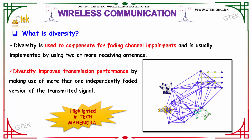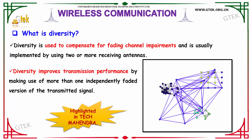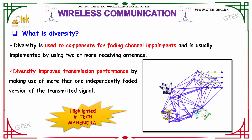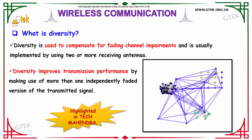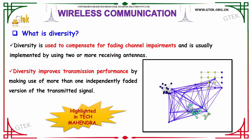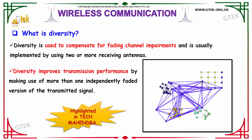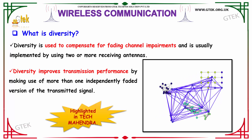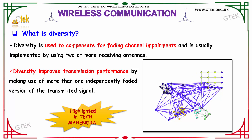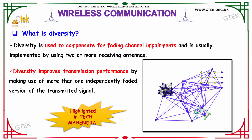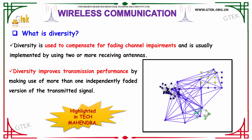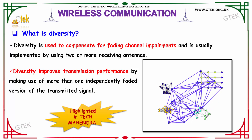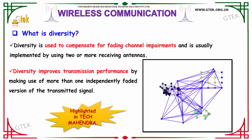What is diversity? Diversity in terms of wireless communication is used to compensate for fading channel impairments, and it is usually implemented by using two or more receiving antennas. Diversity improves transmission performance by making use of more than one independently faded version of the transmitted signal.